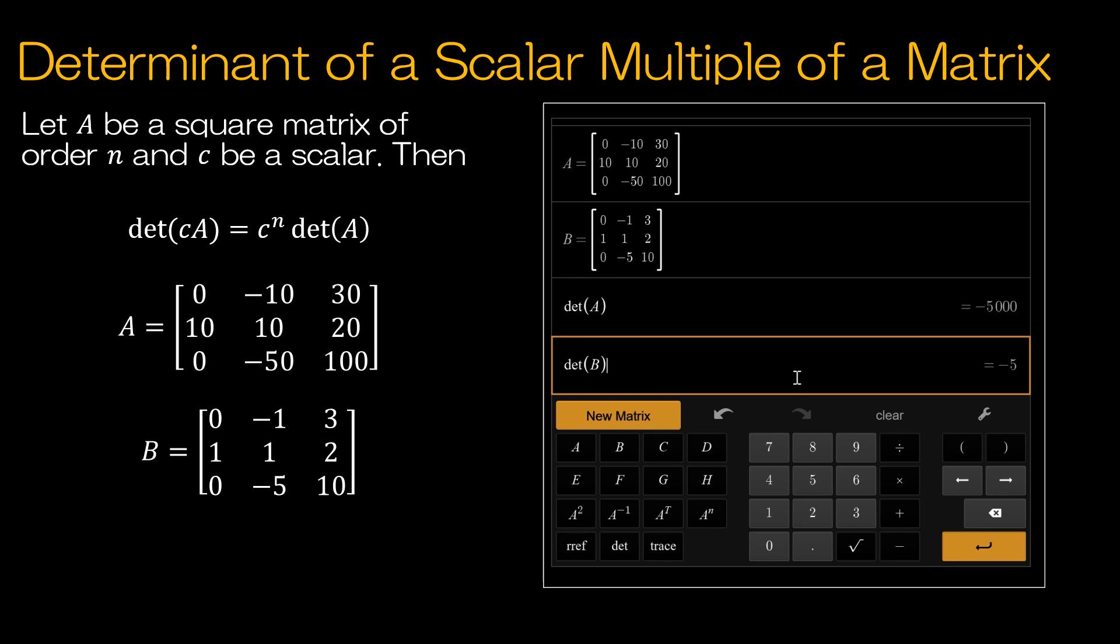One is negative 5, the other is negative 5,000. This property says because this is a 3 by 3 matrix, therefore n is 3, I'm going to take the determinant of B times the scalar, which was 10. I've multiplied everything in B by 10 to get to A. I'm going to take negative 5 times 10 to the 3rd. And that is what gives me negative 5,000, because 10 to the 3rd is 1,000.